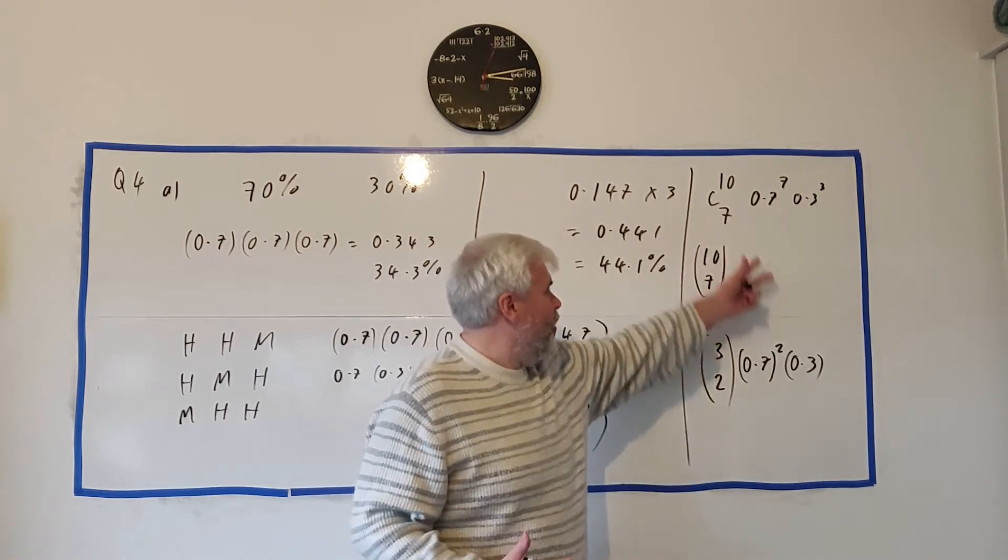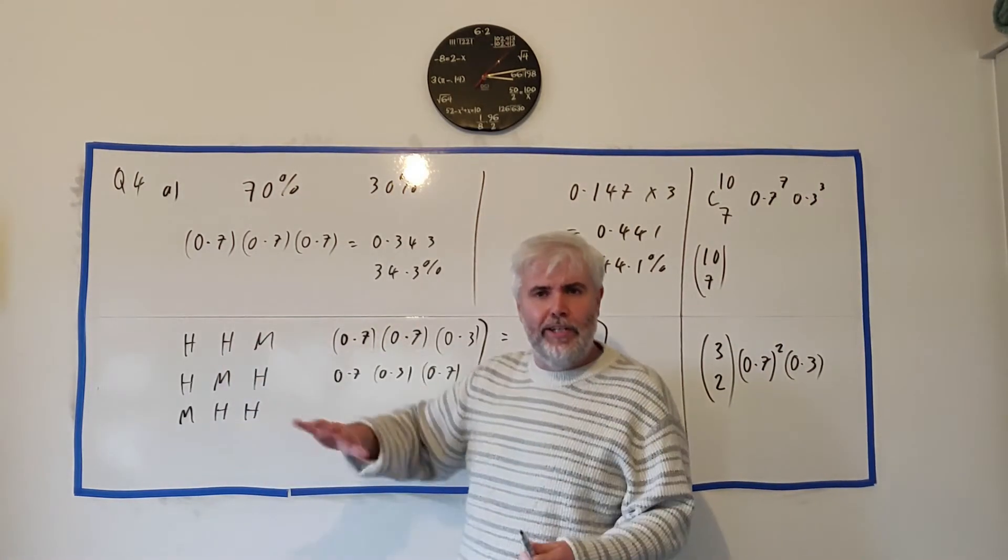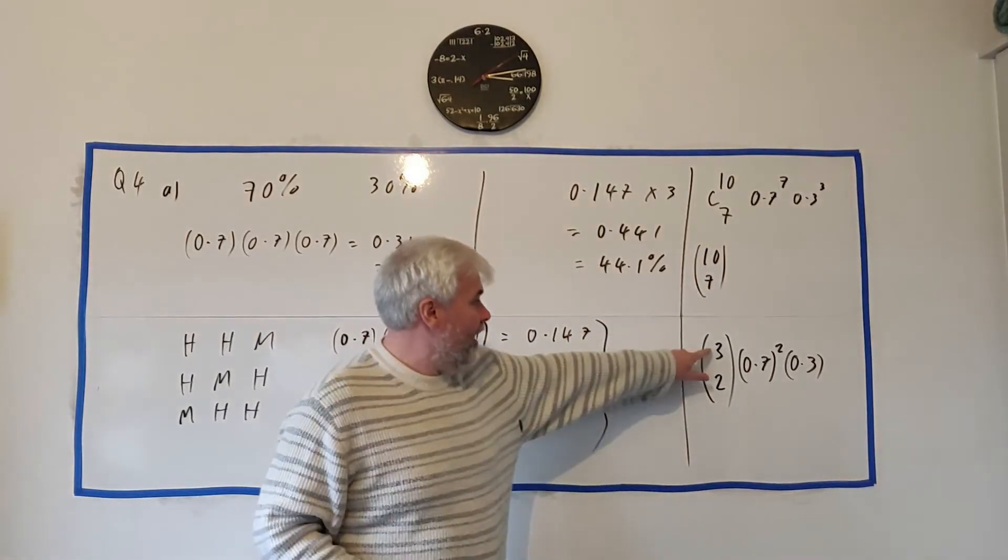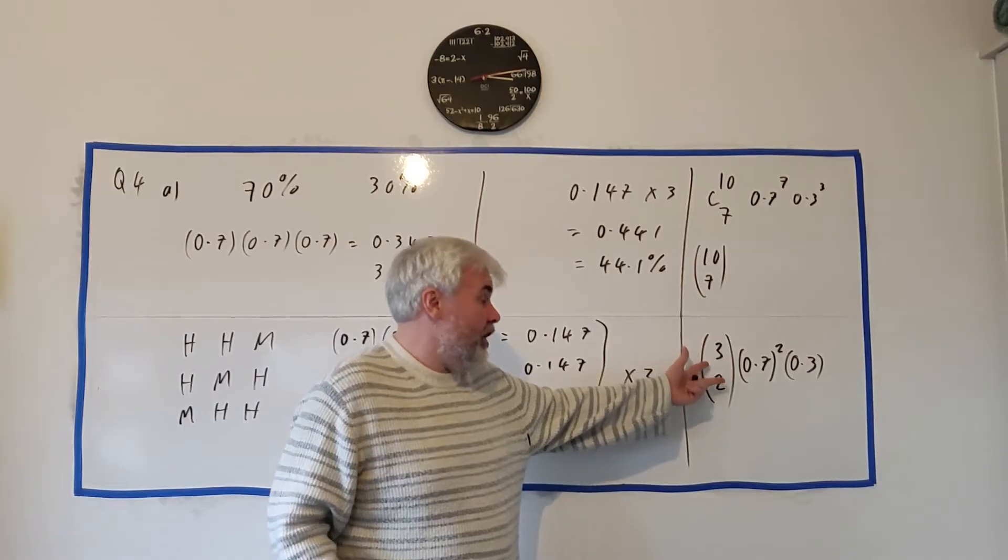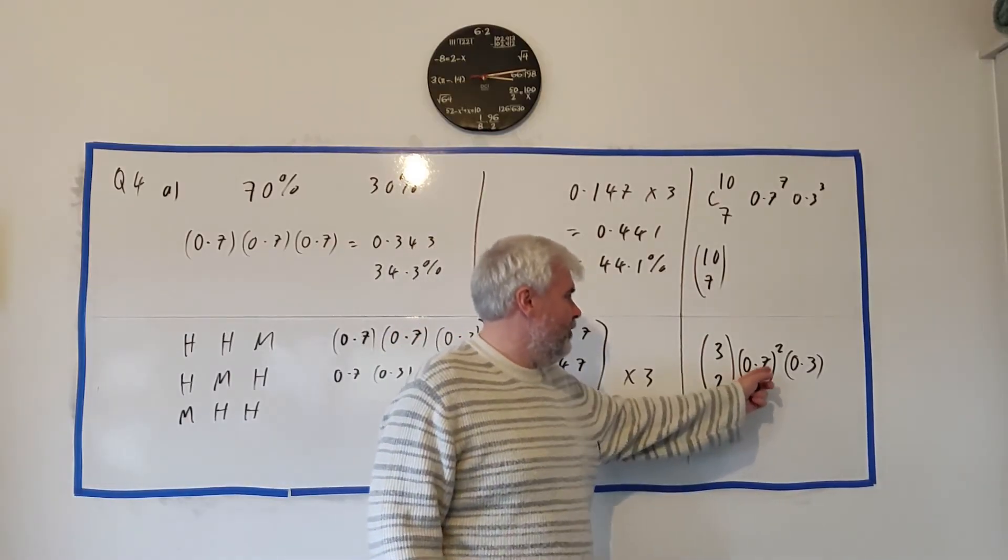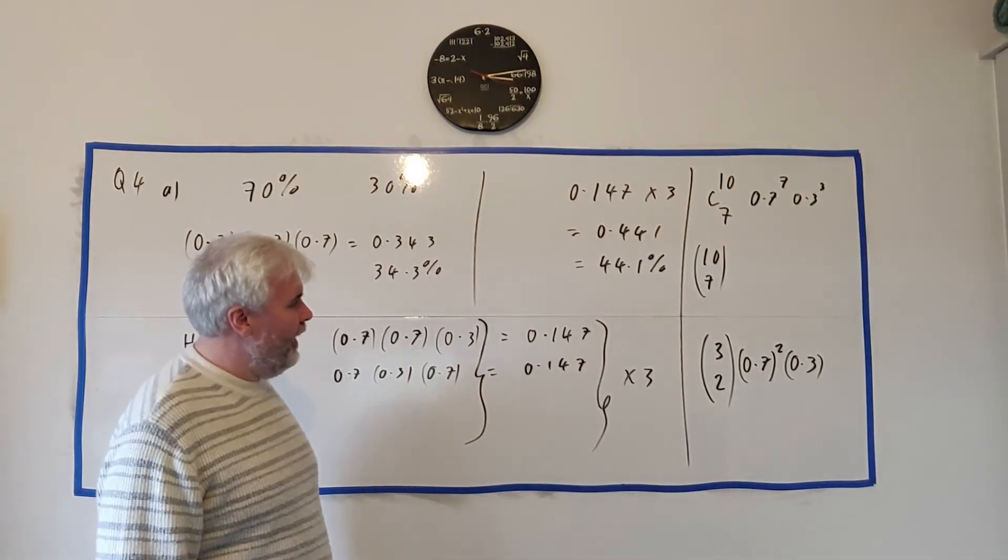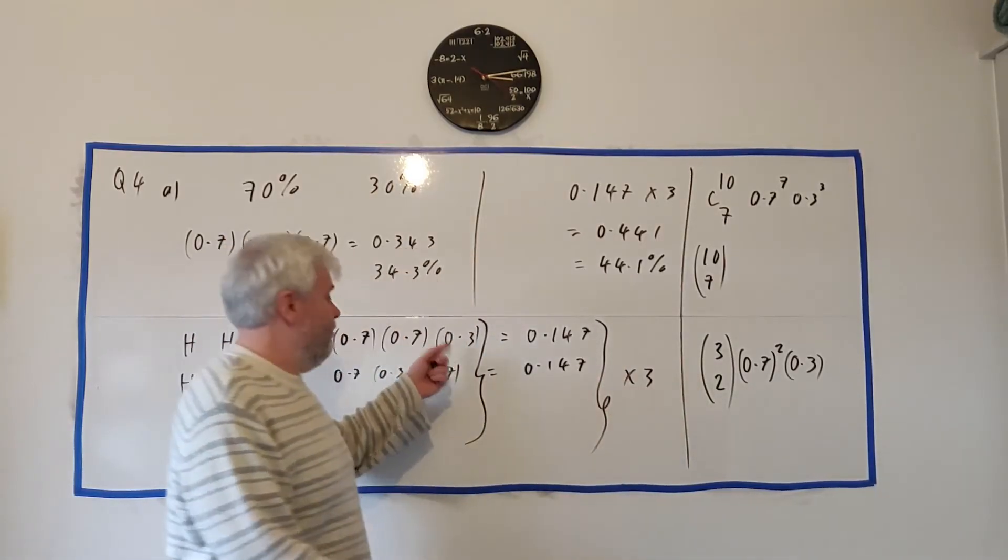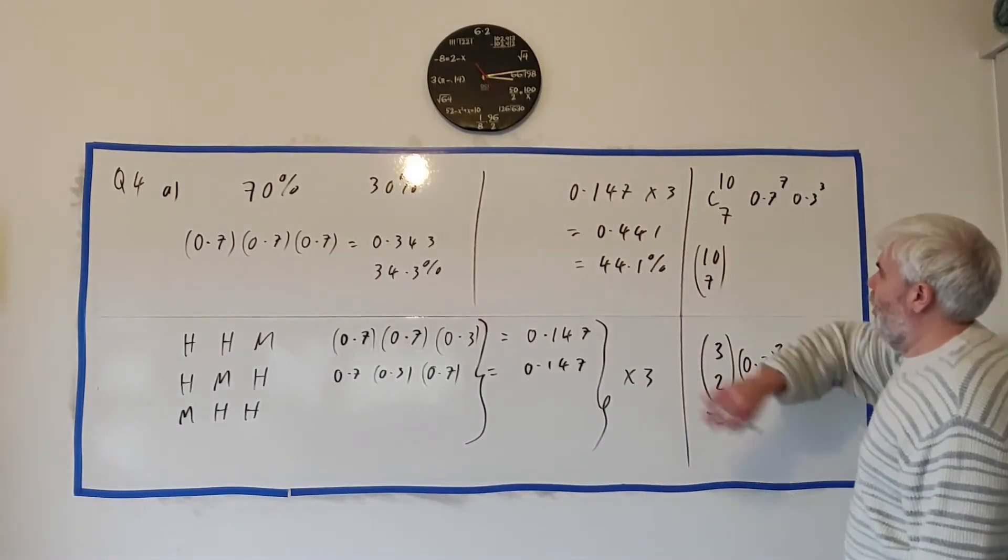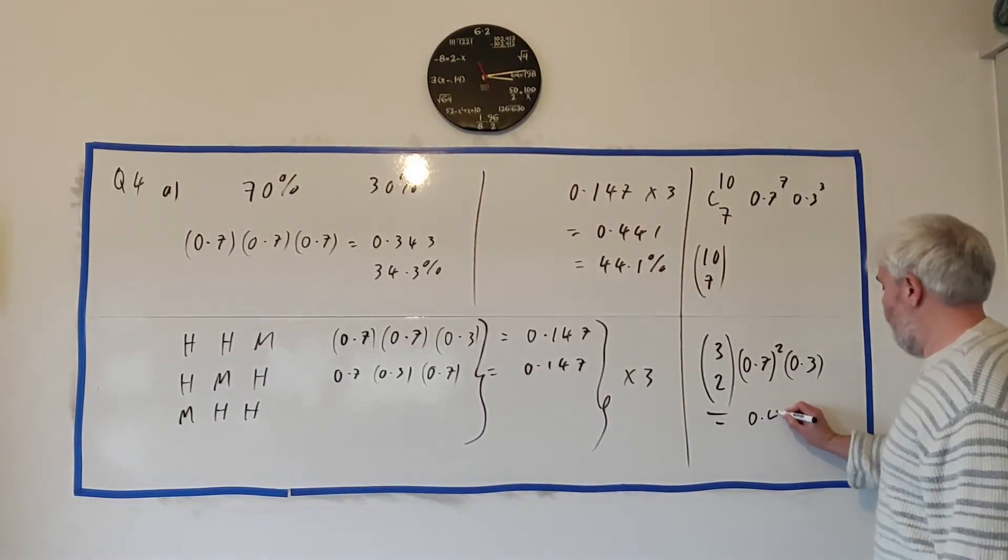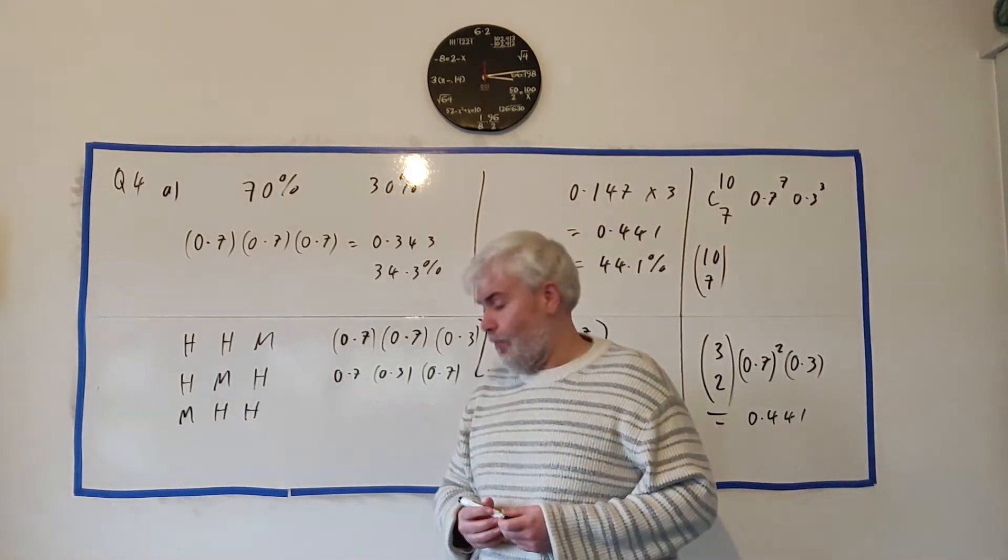In this question here, for example, it would have been 3 choose 2 and hit 2 of them, miss 1 of them. So some students might just write this for this question. And the advantage of this is it can be done in many different questions. You don't have to write out, how many different ways are there? The calculator will tell you how many ways. 3 choose 2 will come out as 3. 0.7 squared is what we did here. Anyway, this will get the same answer, 0.441.